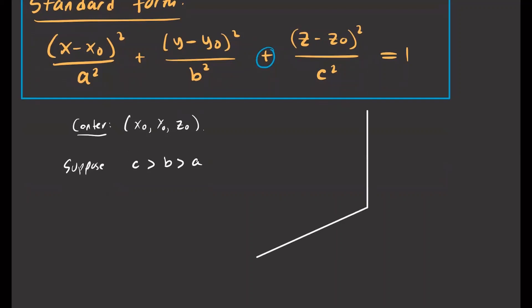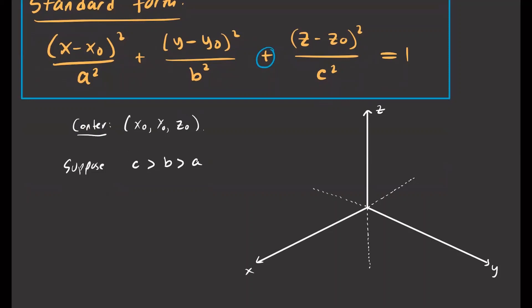Let's set up our x, y, z plane. We draw the positive x, y, and z axes, then negative x, negative z, and negative y directions. Since a is smallest, we mark distance a from the origin along the x-axis in both directions. b is a little greater than a, so we go further in the y-direction, b units from the center in both directions. For z, since c is greatest, we mark c up and negative c down.